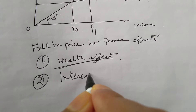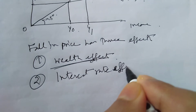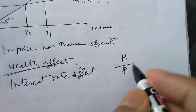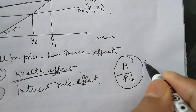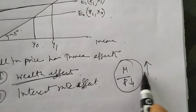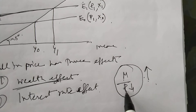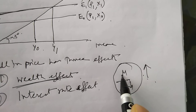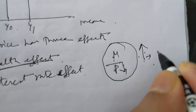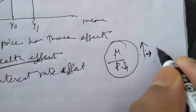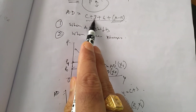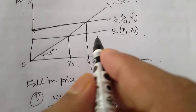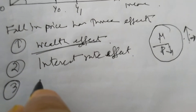Number two is the interest rate effect. When price falls, the real money balance M/P will rise. Given that money supply is not changing — the change is only taking place in price — when price falls, real money supply will increase. When real money supply increases, given the demand for money is constant, that will cause a fall in the rate of interest. When the rate of interest falls, investment demand will increase. So investment demand is also one of the components of aggregate demand.